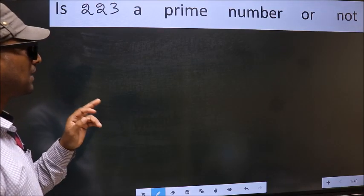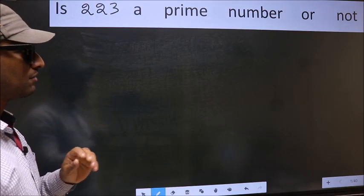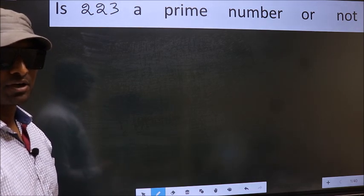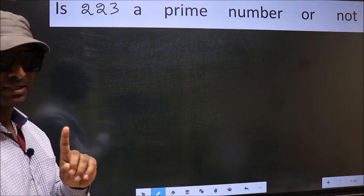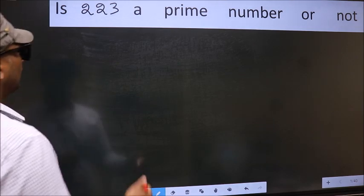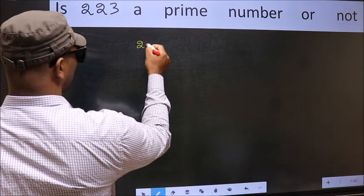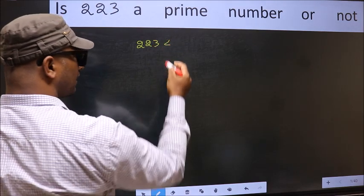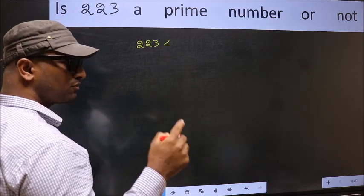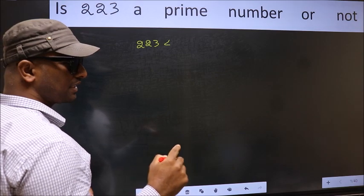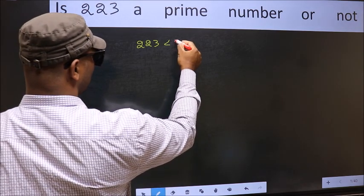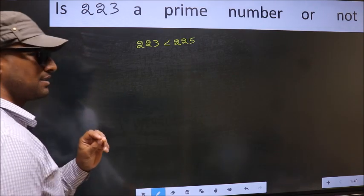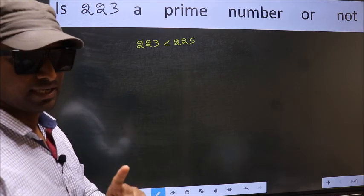Is 223 a prime number or not? To check whether the given number is prime or not, step 1: Given number 223 is less than and close to which perfect square number is 225. This is your step 1.